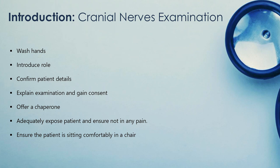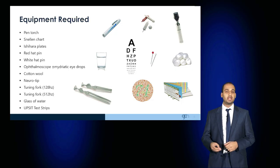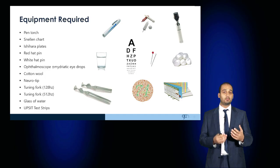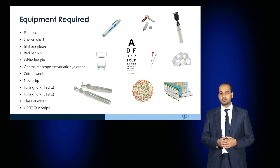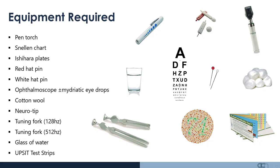Ensure that you have got all of the correct equipment. This includes a pen torch, a Snellen chart, Ishihara colour plates, a red hat and a white hat pin, an ophthalmoscope with mydriatic eye drops, cotton wool, neuro tips, tuning forks of 128 Hz and 512 Hz, a glass of water and upsetting test strips.